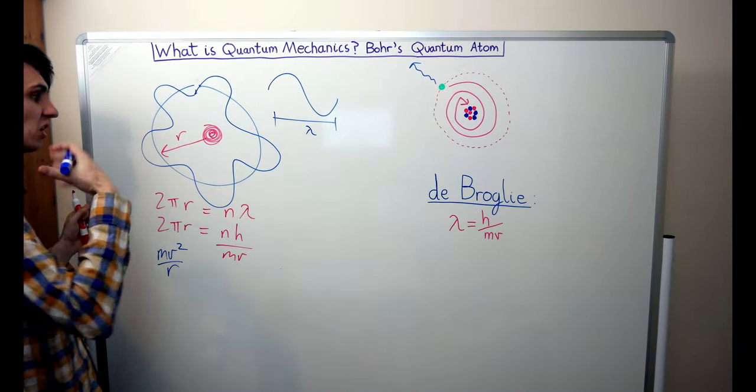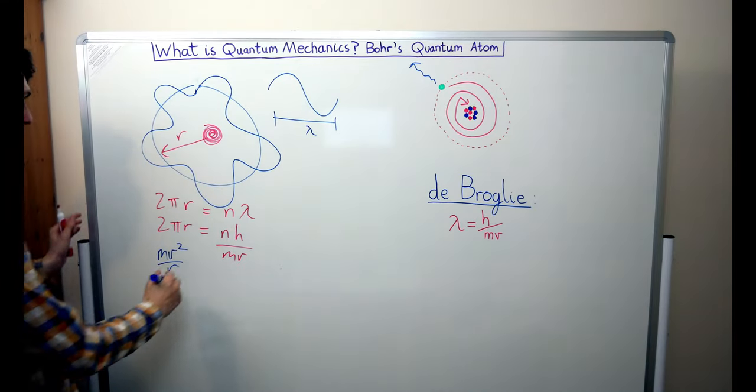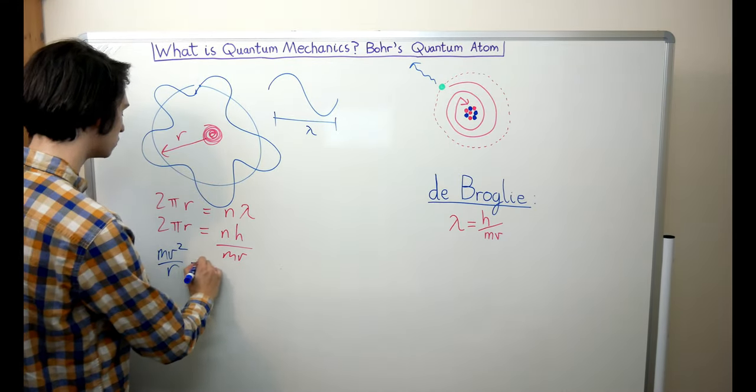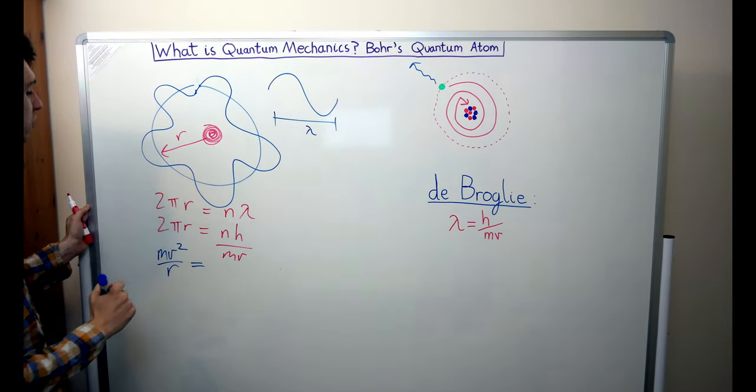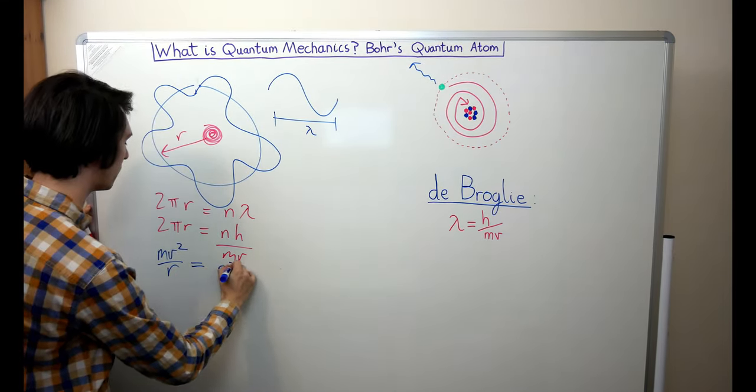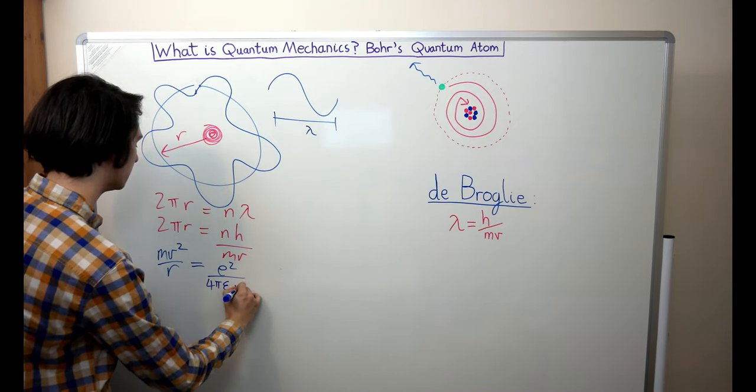Now in this case it's the electric force which is providing our centripetal force, and so this mv² over r has got to be equal to the Coulomb force, which if we assume that we've got one electron and one proton in the nucleus, we have e² divided by 4πε₀r².